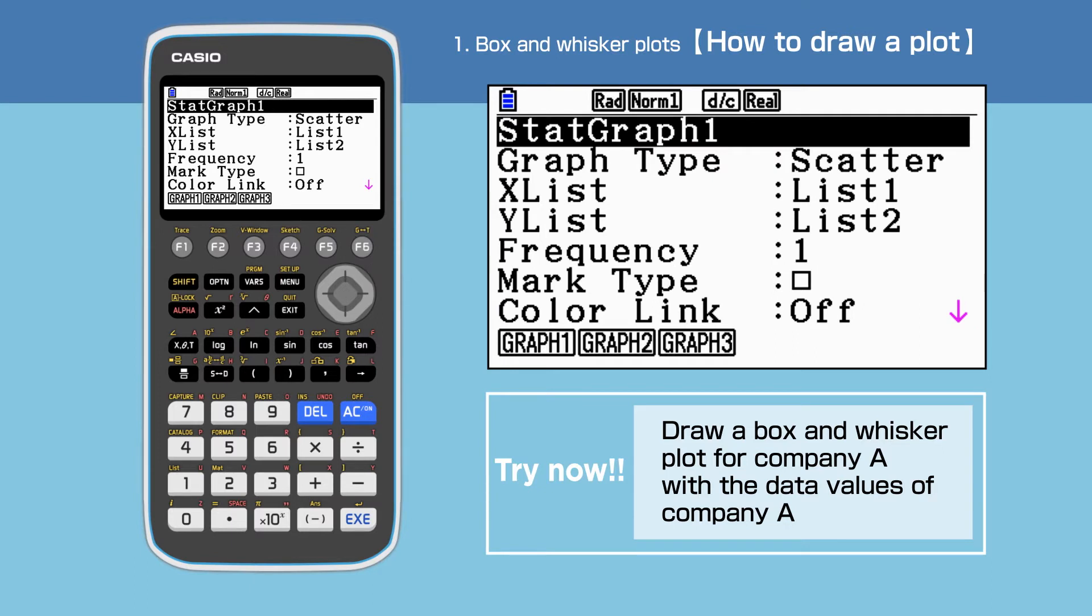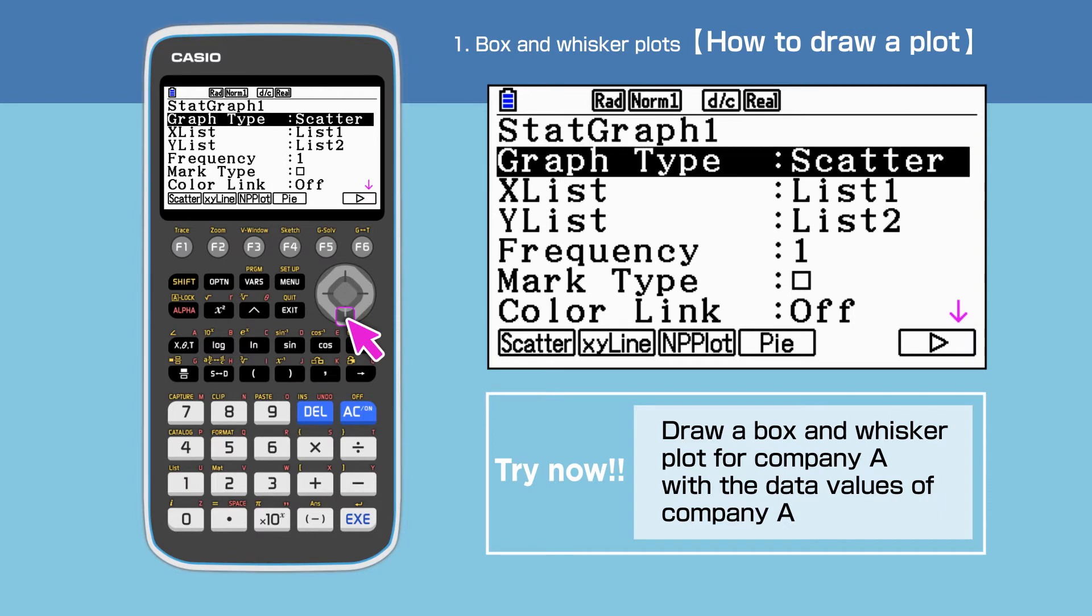We will be using stat graph 1 here. Highlight graph type, press F6 to go to the next command menu, then press F2 to select med box.